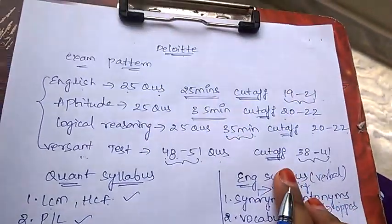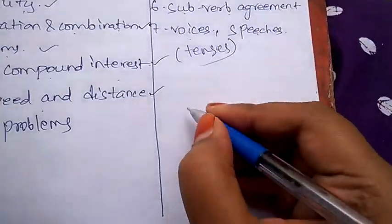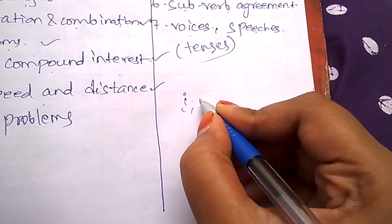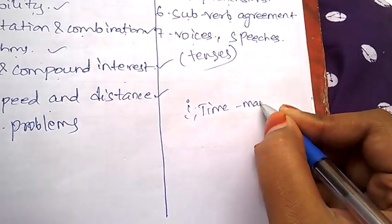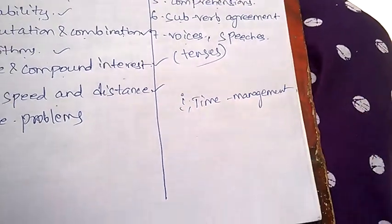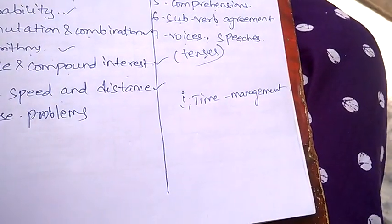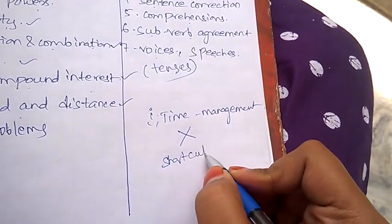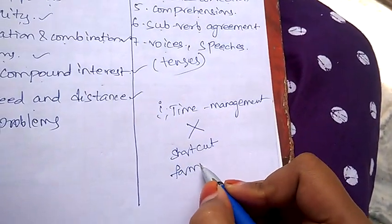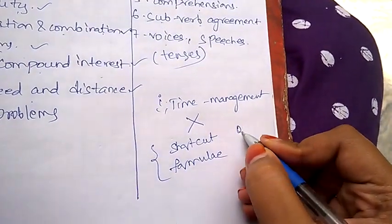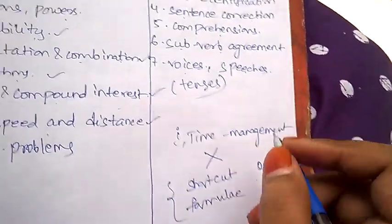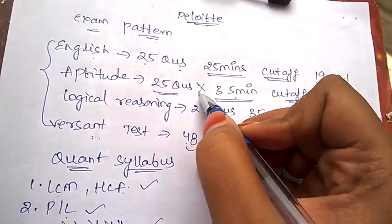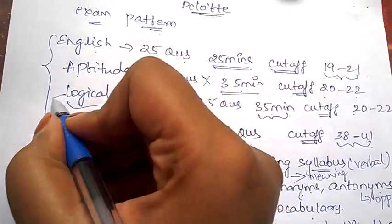These are the most important topics and few tips which I would like to give for Deloitte. Prepare well for time management. If you think that you need to solve there and then without any formula, that will not work. Make sure you follow all the shortcut methods and remember all the formulas for quantitative aptitude. Time is very less. It looks like you have 35 minutes for just 25 questions, but that's not the case. The time will not be sufficient, mainly for logical reasoning you will always run out of time.